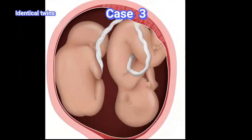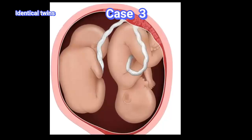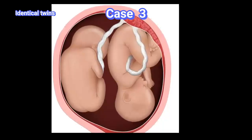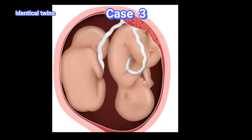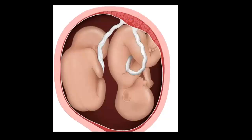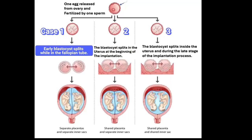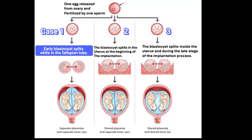This type of twin — sharing both placenta and amniotic sac — is not very common. The most common of the three cases is the one in which the twins share the same placenta but have separate amniotic sacs. This slide summarizes the three cases. In the first case, one sperm fertilizes one egg and the blastocyst splits within the first 72 hours after fertilization while still in the fallopian tube, resulting in twins each having a separate amniotic sac and separate placenta.